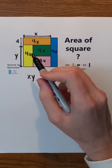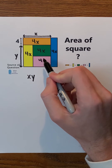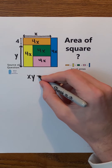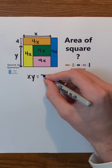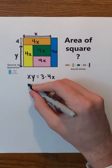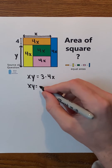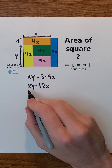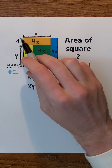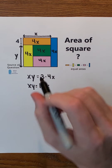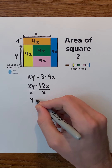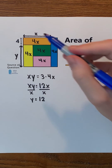Because this inner rectangle has 3 rectangles inside of it, its area x times y must be equal to 3 times 4x. 3 times 4 is just 12. Then we can divide both sides of the equation by x, since x is not 0 because it's a side length. After dividing, we see that y equals 12.